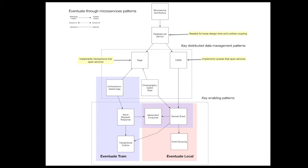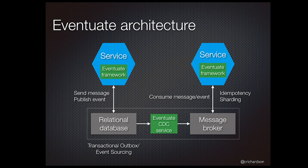Here is the very high-level architecture of an application that uses Eventuate. Services are written using the Eventuate framework. A producer service sends a message or an event using the Eventuate framework. Eventuate stores the message or event in a database. The CDC service reads the message from the database and publishes it to the message broker. A consumer service uses the Eventuate framework to consume messages or events. The Eventuate framework builds on the underlying capabilities of the message broker client library, adding essential features such as idempotency and, when necessary, sharding.